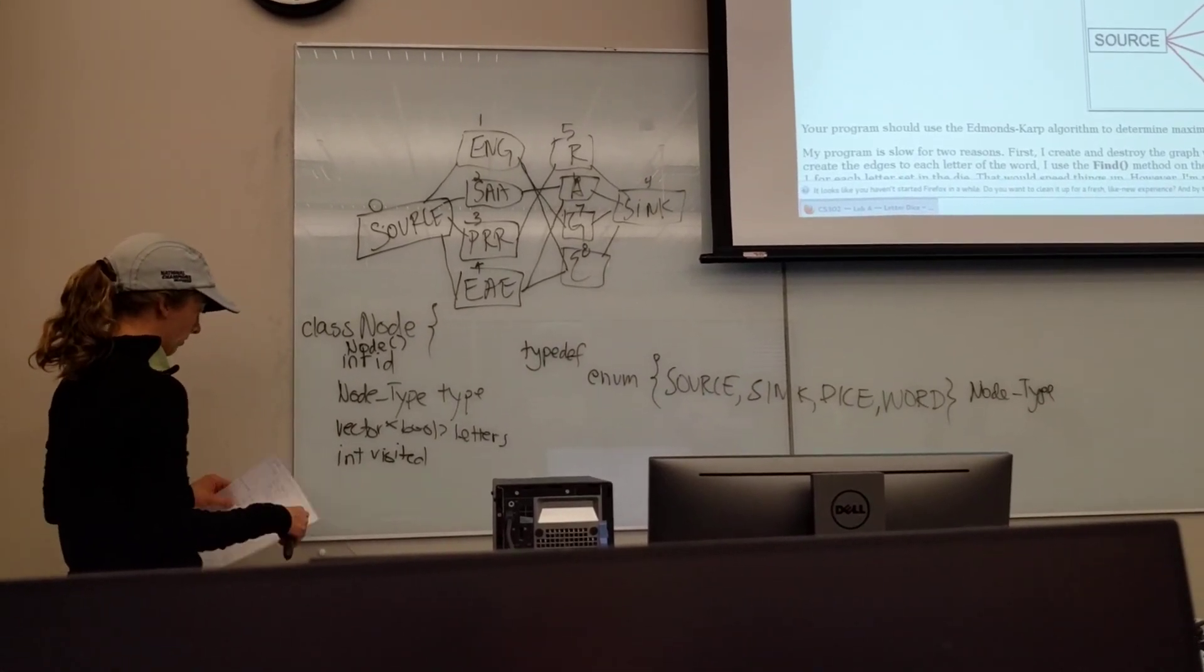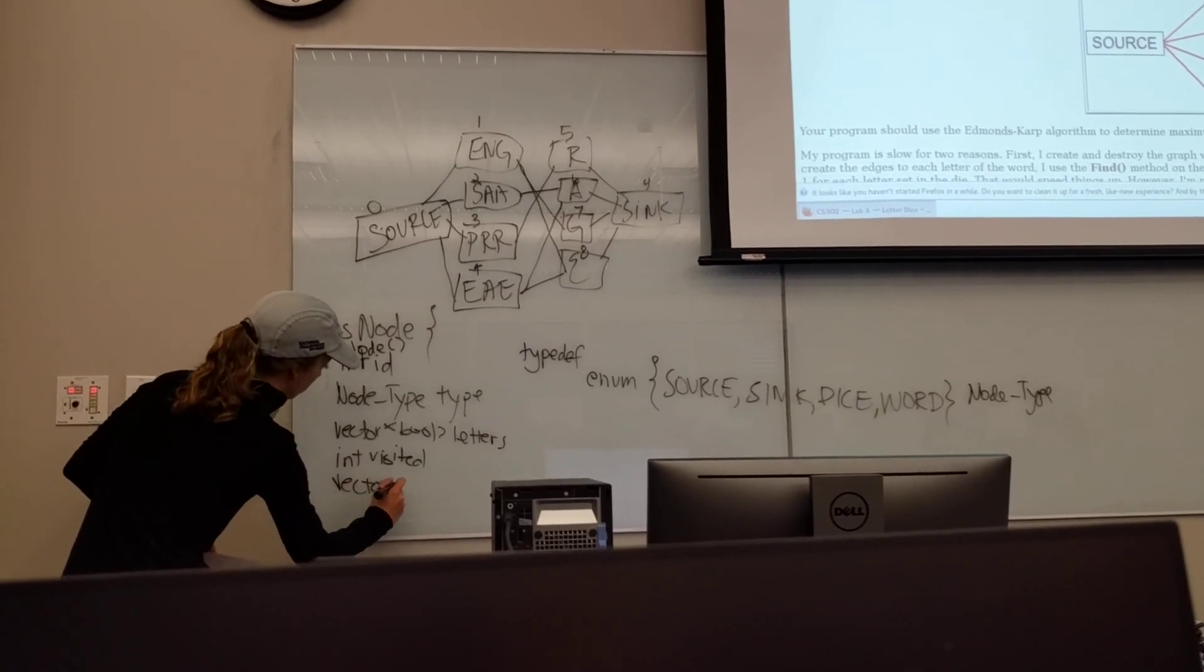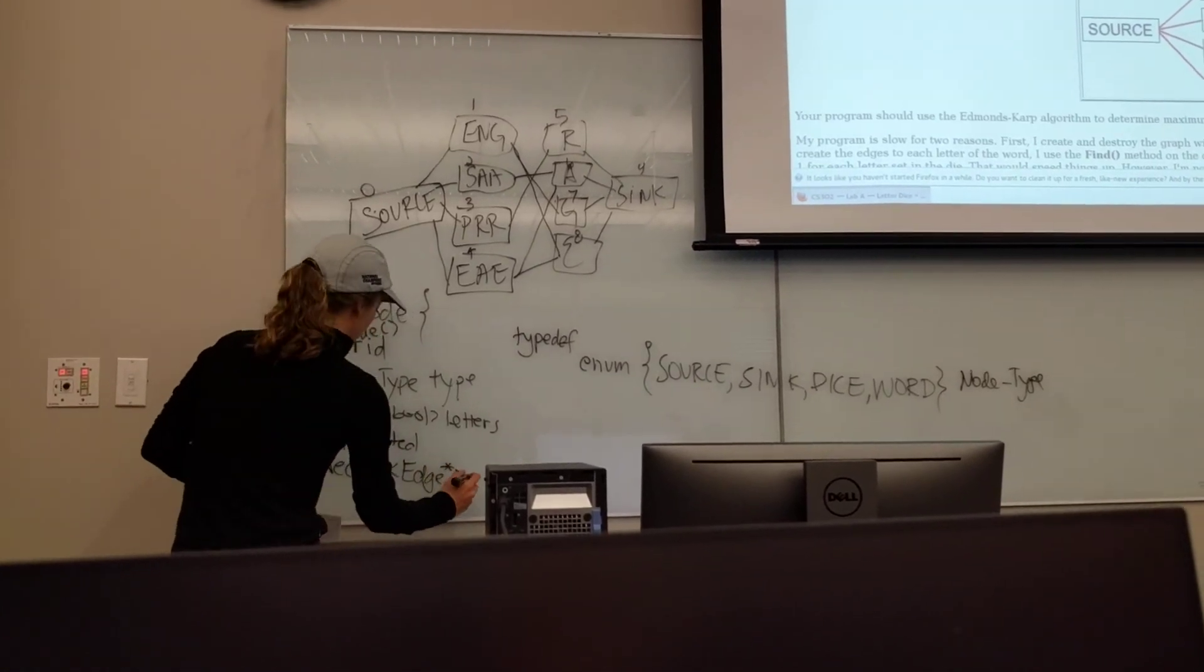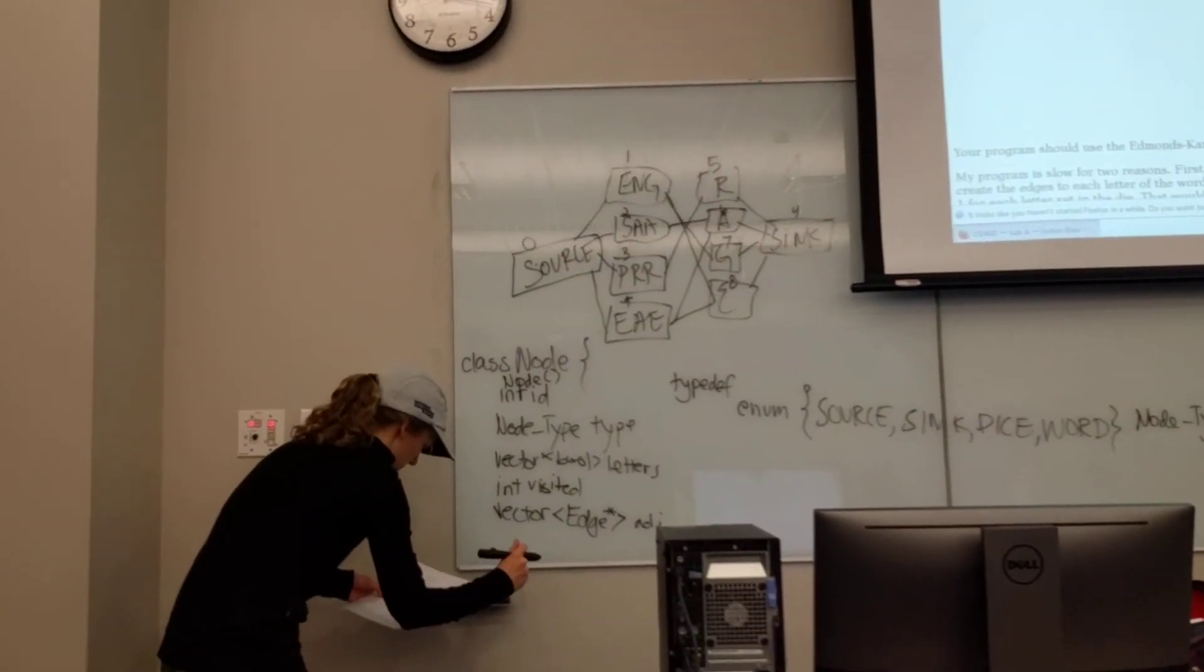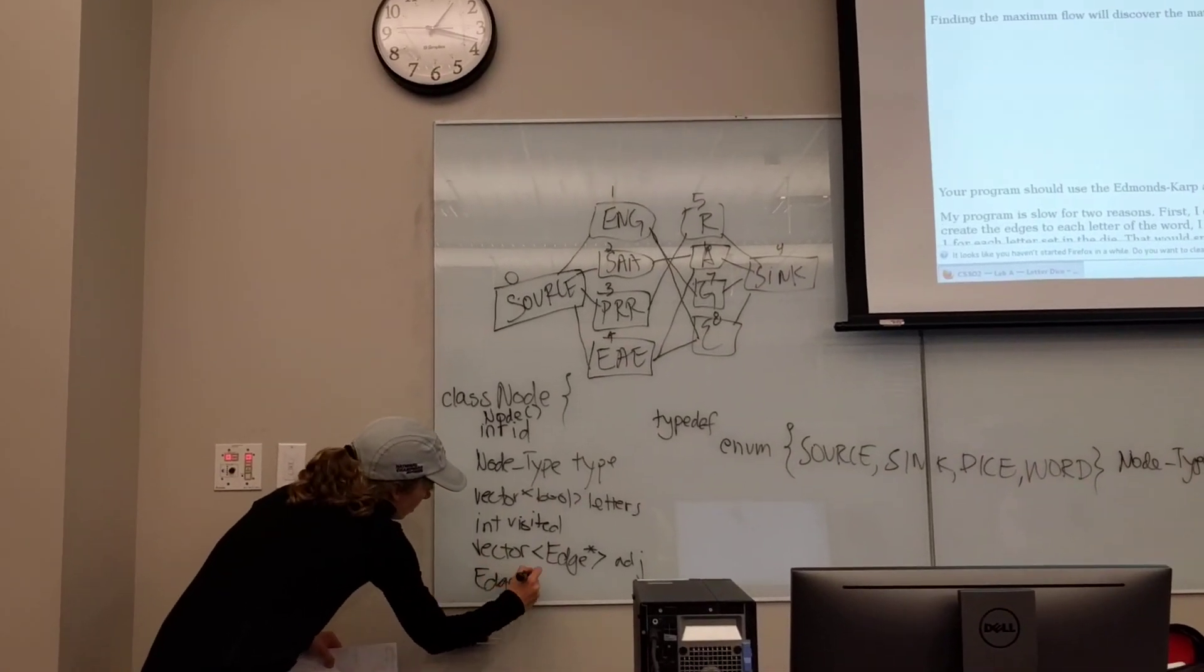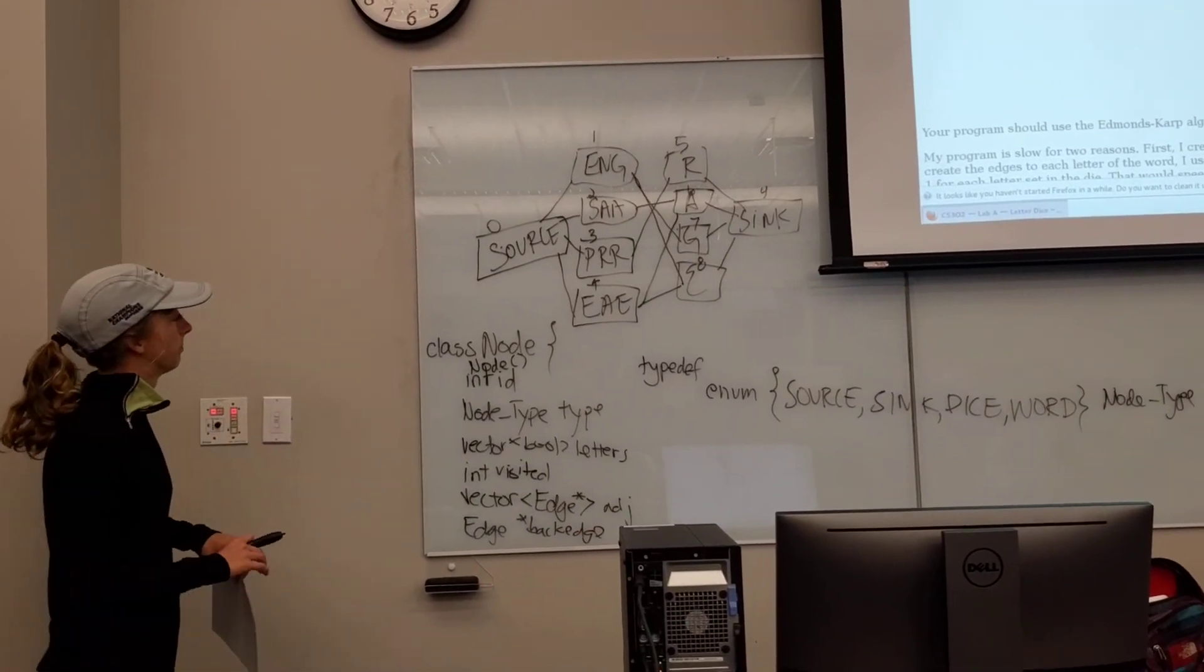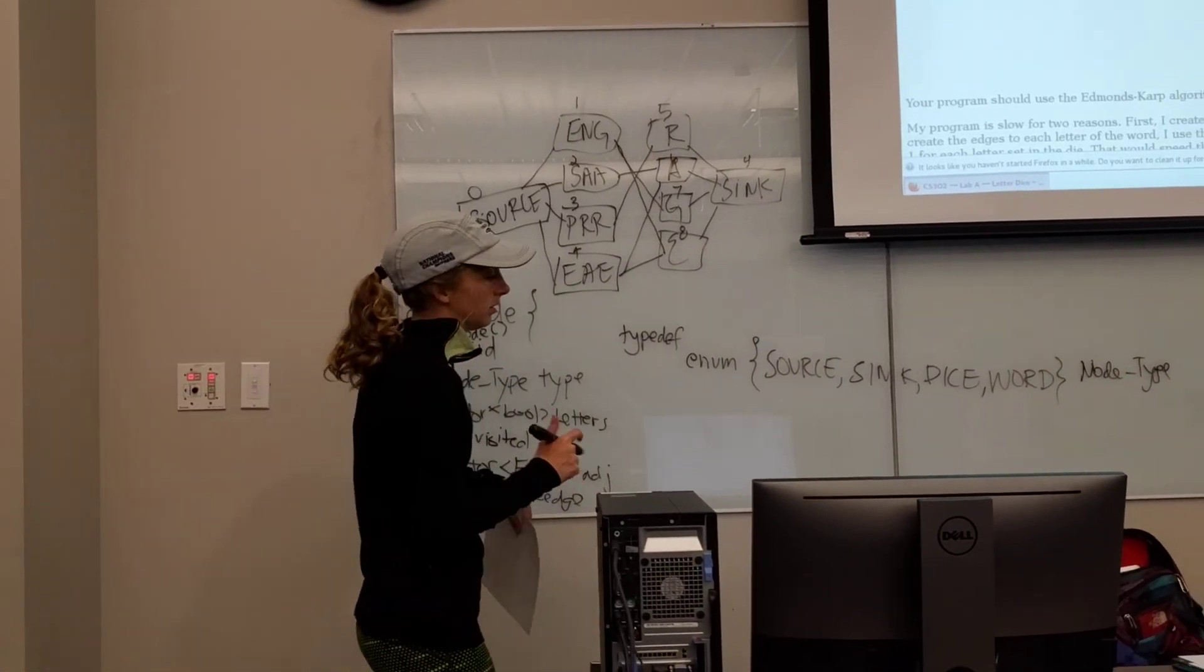And the last few things we need are an adjacency list, of course, so that will be a vector of edge stars, which we have not talked about yet, and a back edge, which we will need in Edmund's Karp.